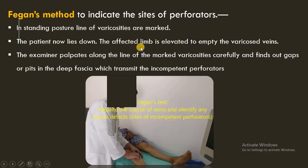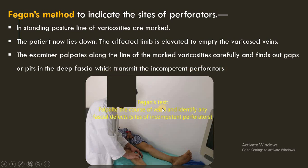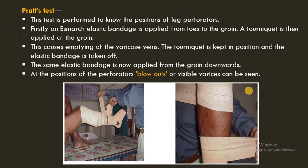Next is Fegan's test, which indicates the site of perforators. In the standing posture, the line of varicosities is marked with the help of a marker. The patient then lies down and the affected limb is elevated to empty the varicose veins. The examiner palpates along the marked line of varicosities to find gaps or pits in the deep fascia, which transmit the incompetent perforators. This allows identification of fascial defects and sites of incompetent perforators.